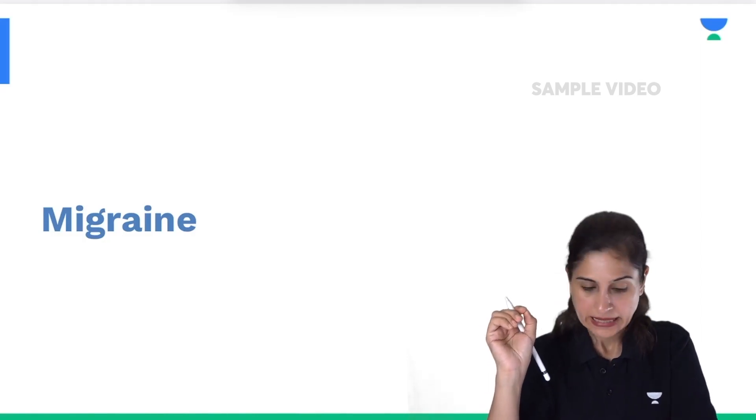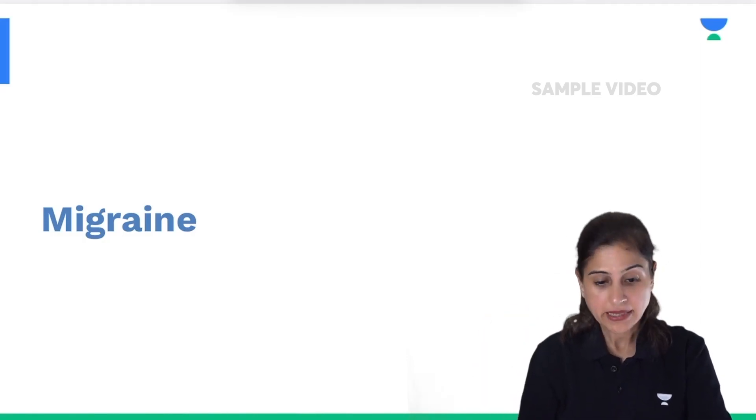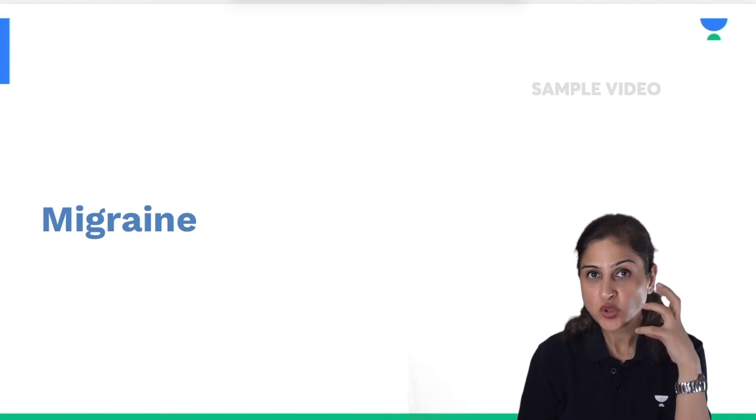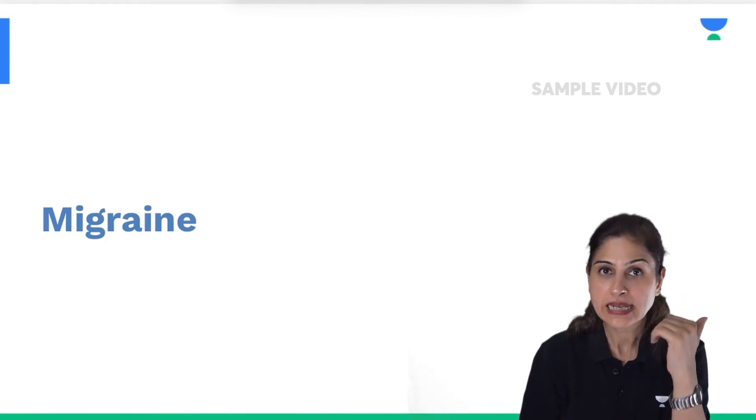Now the next topic is migraine. What is migraine? Migraine is a unilateral throbbing headache with pulsatile nature.